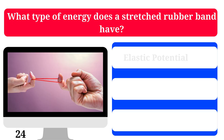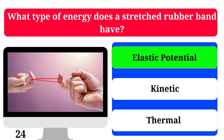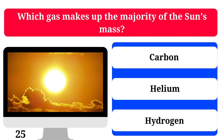What type of energy does a stretched rubber band have? Elastic potential, kinetic, or thermal? The correct answer is elastic potential. Which gas makes up the majority of the sun's mass? Hydrogen, helium, or carbon?